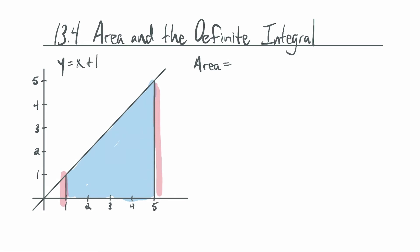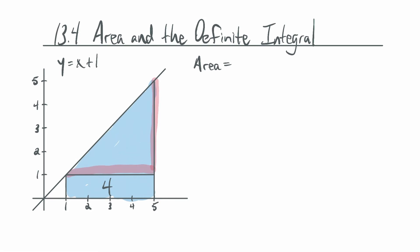One thing we could do is chop this into two pieces. We've got a triangle on top and a rectangle on bottom. The bottom is going to be one unit tall and four units along—from 1 to 5 would be four units—so the area of the bottom part is 4. The triangle has a base of 4 and a height of 4, so base times height over 2, which is 16 over 2, equals 8. So the total area is 12. That's the exact area.